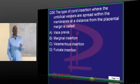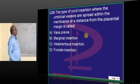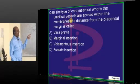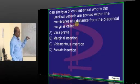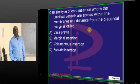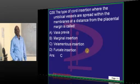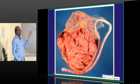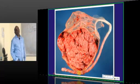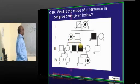Regarding cord insertion: when the umbilical vessels are spread within the membrane at a distance away from the placental margin, you call it velamentous insertion. This is the way a velamentous insertion basically happens.